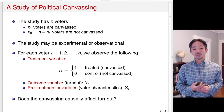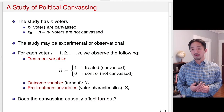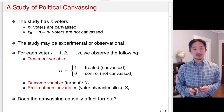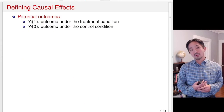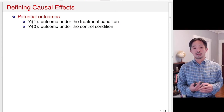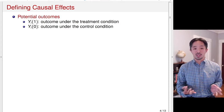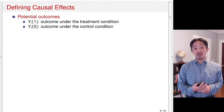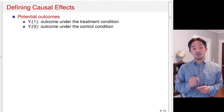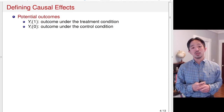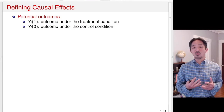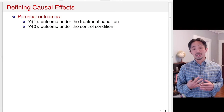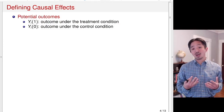The question we would like to ask is: does canvassing causally affect turnout? What is the causal effect of canvassing on turnout? Let's define causal effects using the potential outcomes framework — this is very important for the rest of the lecture and the course. There are two potential outcomes for each voter. Y(1) represents the outcome that would be realized if the voter is canvassed — that is, the outcome under the treatment condition.